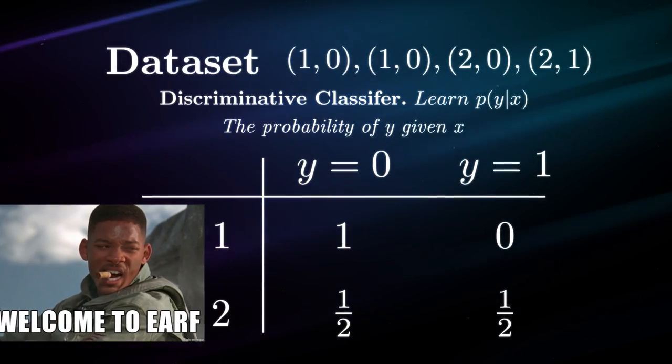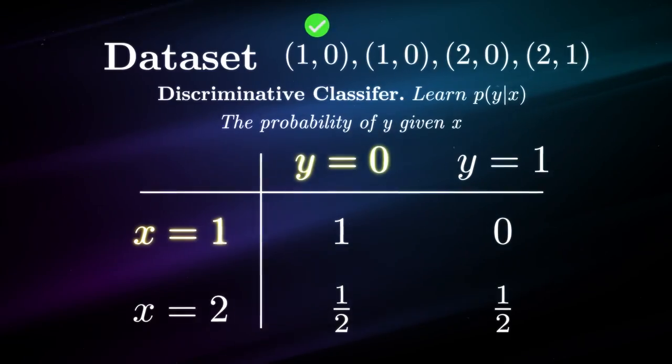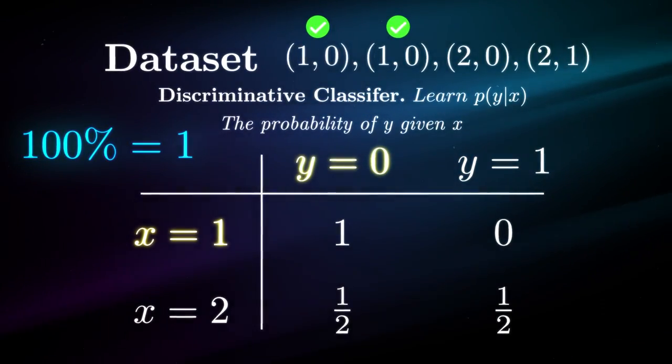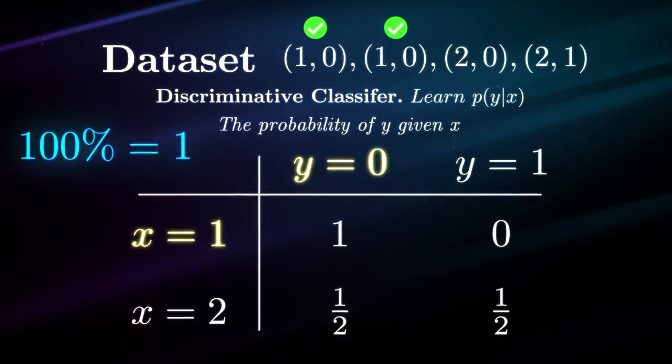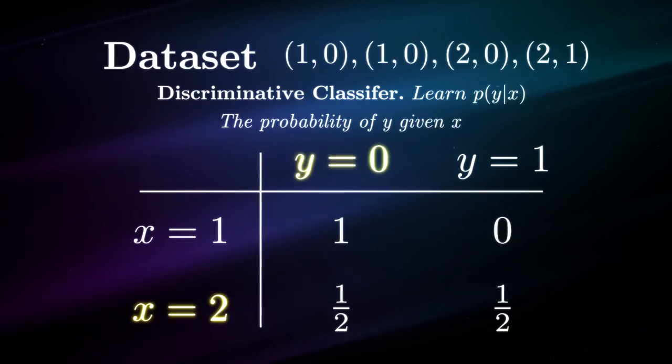So if we iterate through each data point and check if given that X equals one, what's the chance that Y equals zero? It's 100% for the first data point and 100% for the second. So the total is 100%.